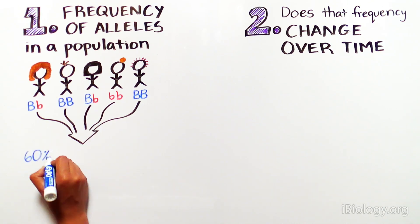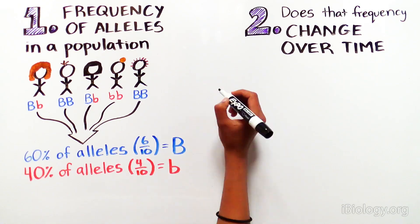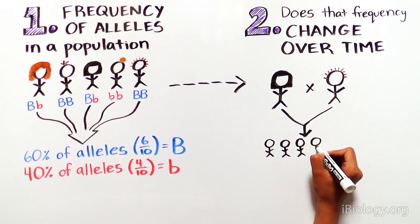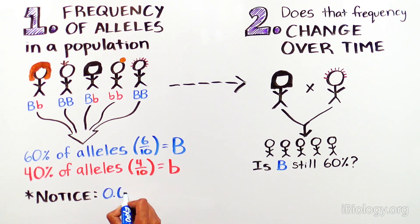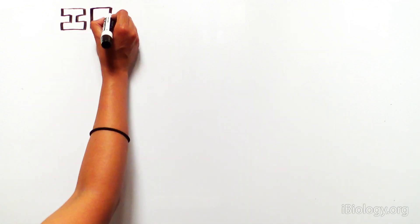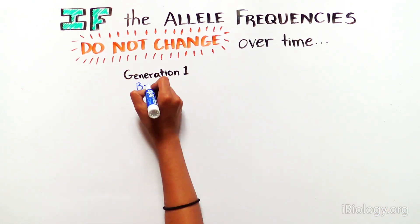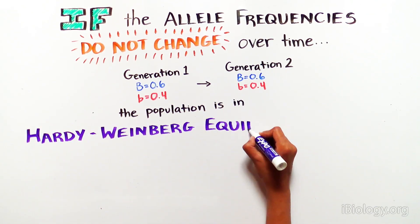For example, if you start out with 60% of the alleles being capital B and 40% being lowercase b, after the organisms mate, are there still 60% capital B and 40% lowercase b? Notice also that the allele frequencies 0.6 and 0.4 add up to 1 — a key aspect of solving Hardy-Weinberg equilibrium problems. Hardy and Weinberg postulated that if the allele frequencies did not change over time, then the population was in equilibrium, which we call Hardy-Weinberg equilibrium.